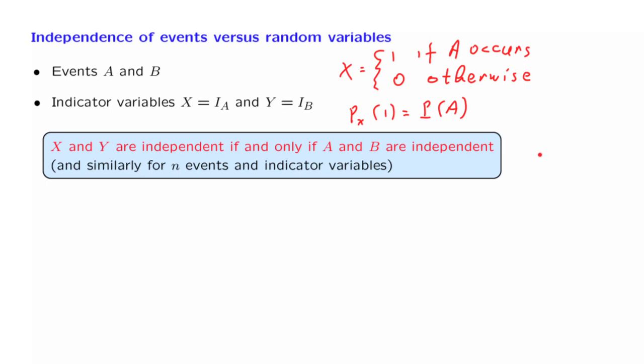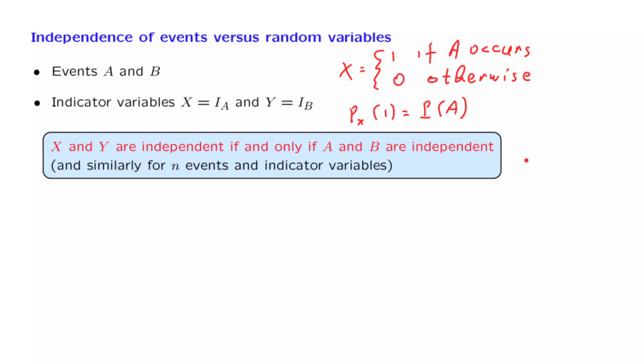It is instructive now to go through the derivation of this fact, at least for the case of two events, because it gives us perhaps some additional understanding about the precise content of the definitions we have introduced. So let us suppose that random variables X and Y are independent. What does that mean? Independence means that the joint PMF of the two random variables X and Y factors as a product of the corresponding marginal PMFs.